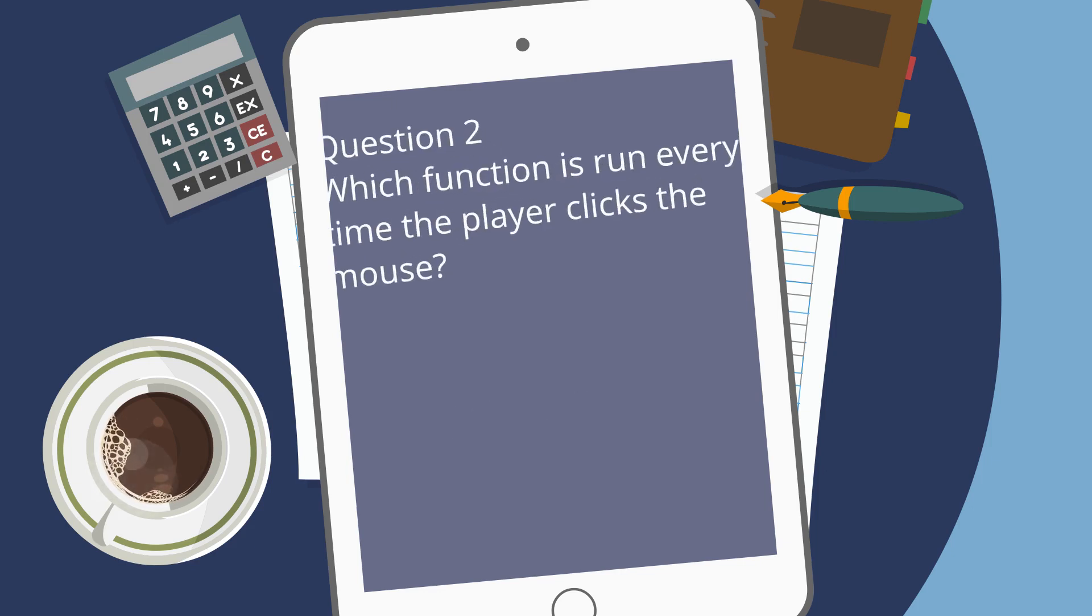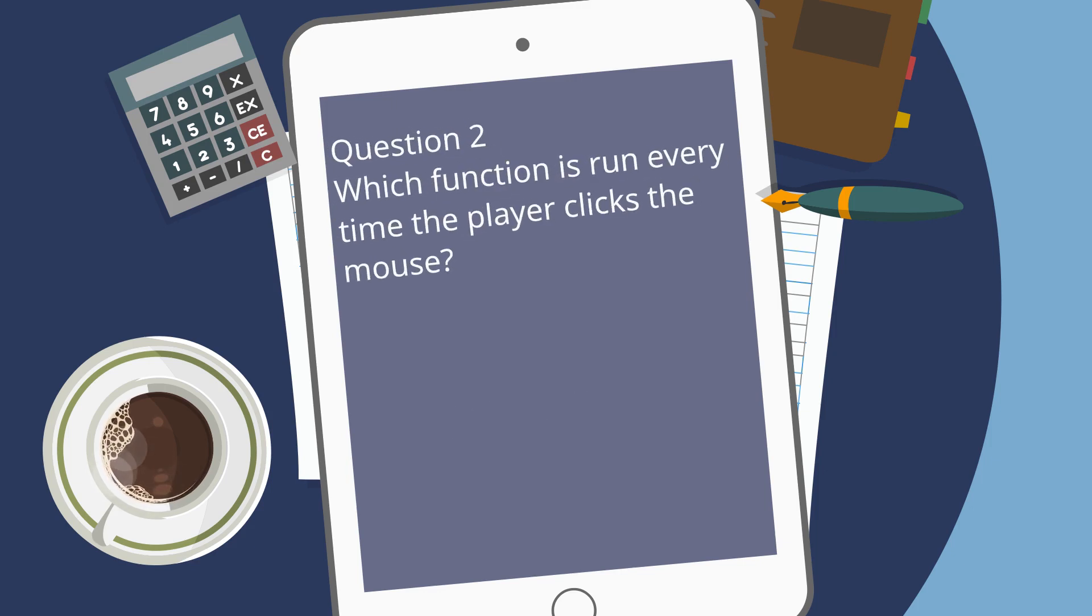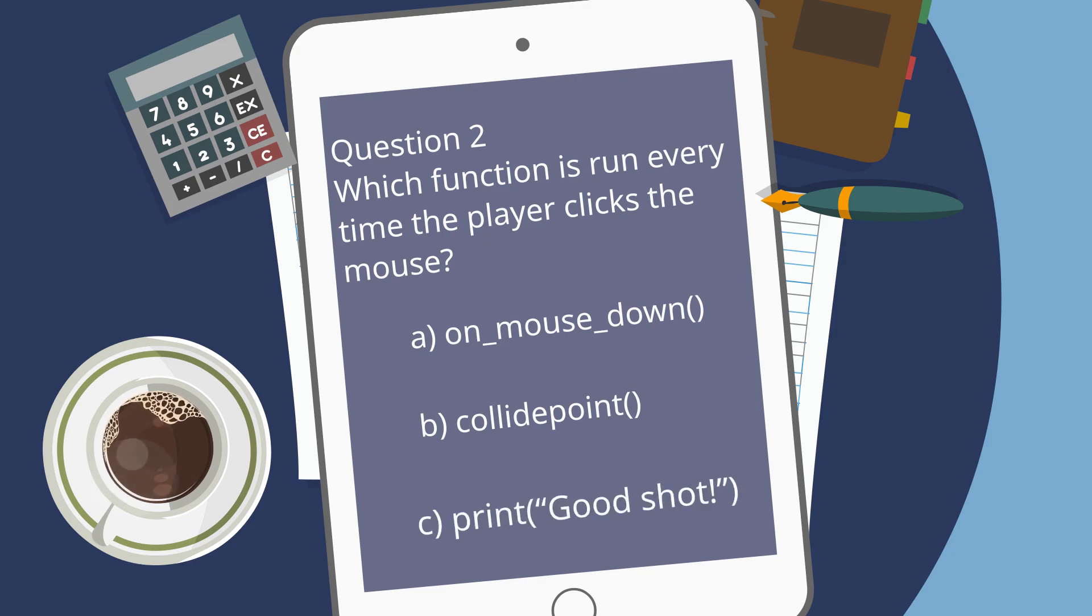Question 2. Which function is run every time the player clicks the mouse? A. On mouse down. B. Collide point. C. Print quote good shot. The answer is A. The function is run every time the player clicks the mouse. Exactly!